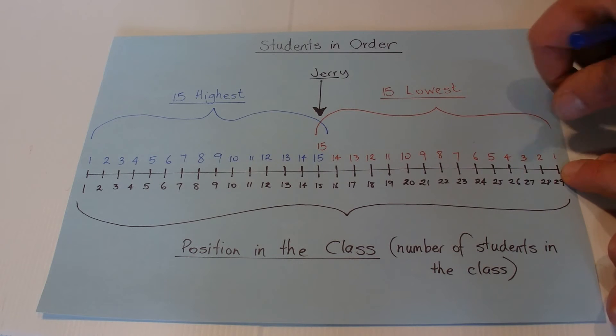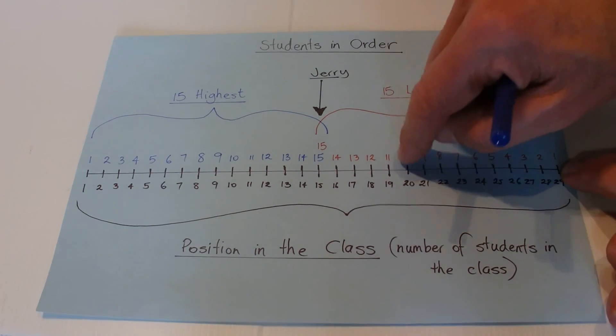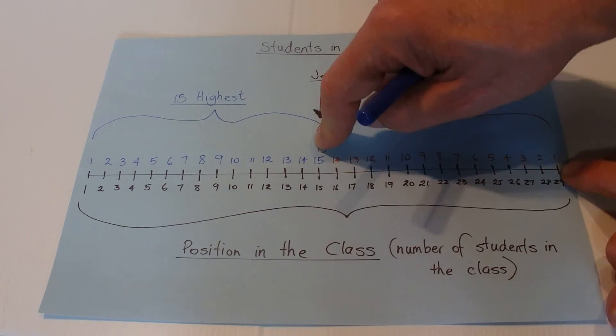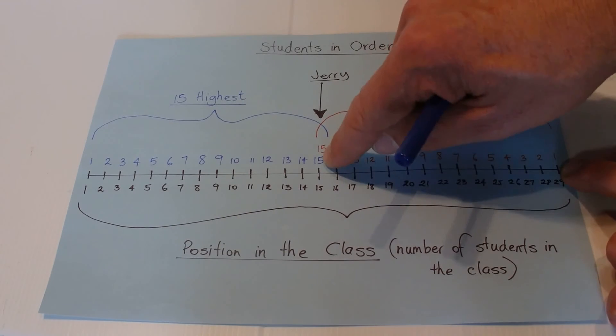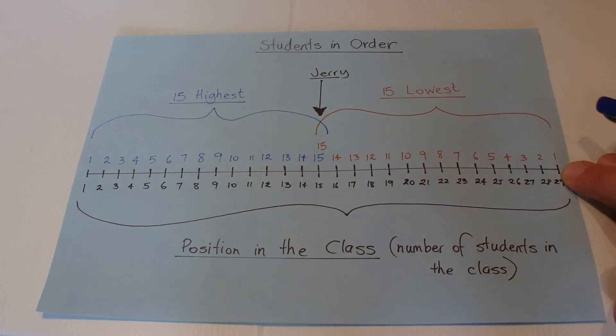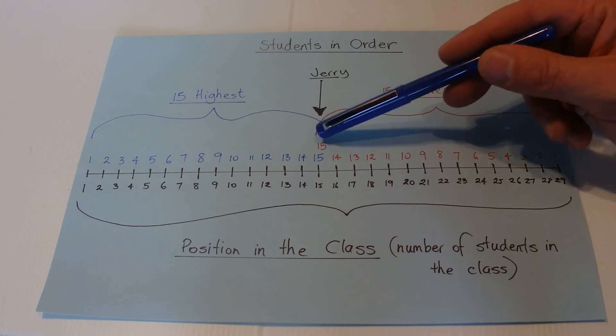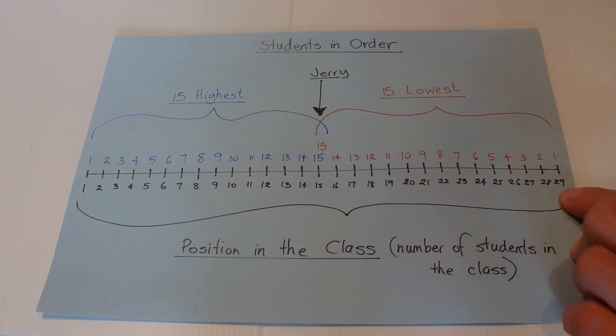1, 2, 3, 4, 5, 6, 7, 8, 9, 10, 11, 12, 13, 14, 15 - there's Jerry again at the 15th lowest mark in the class. He's right in the middle, so that means there's only 29 students in the class.